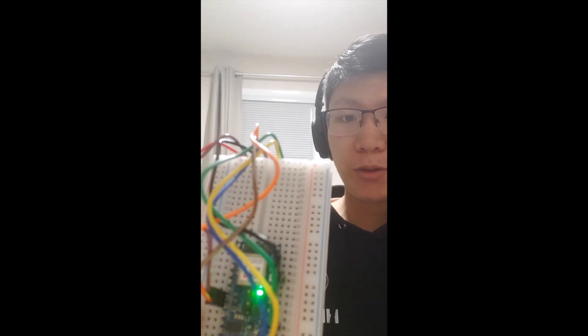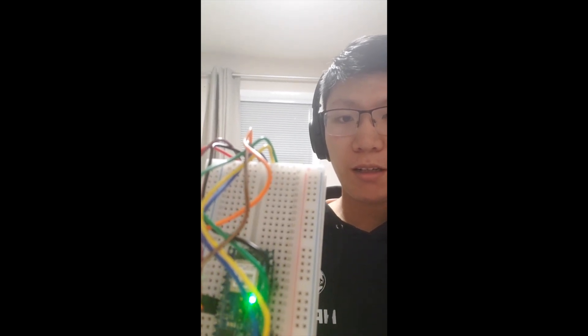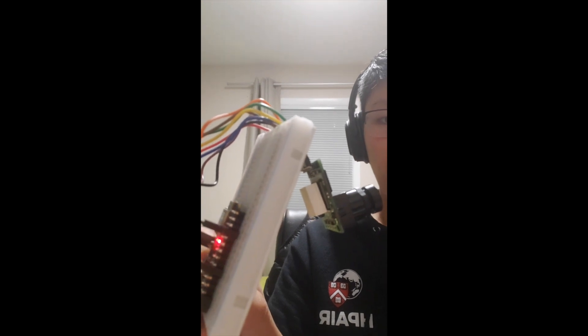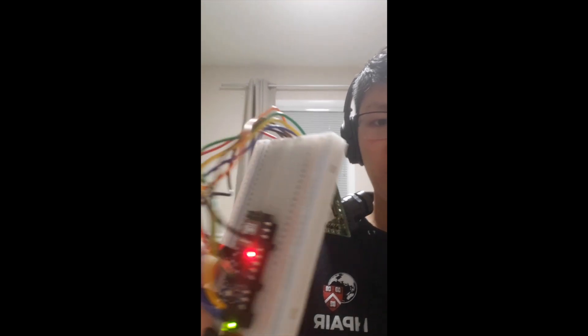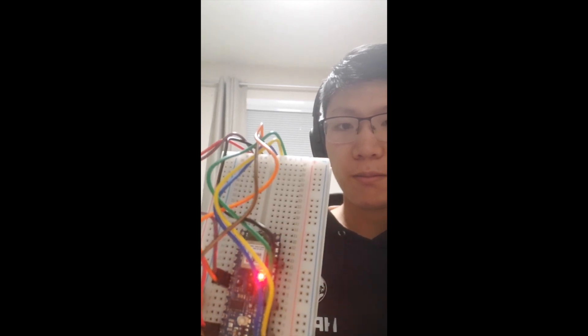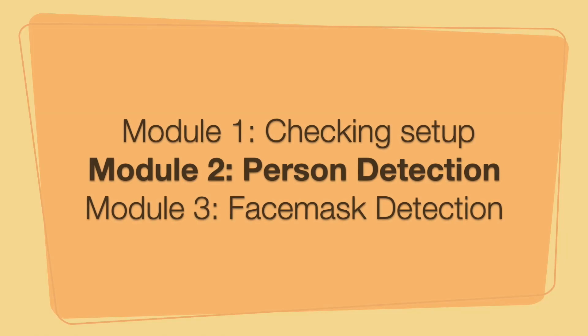...it turns green after a few seconds and stays green as long as it's pointed at me. If we rotate again to the wall it turns red. Back to me, it turns green. So you just saw the Arduino and camera setup working using the Arduino professionally provided version of the model.